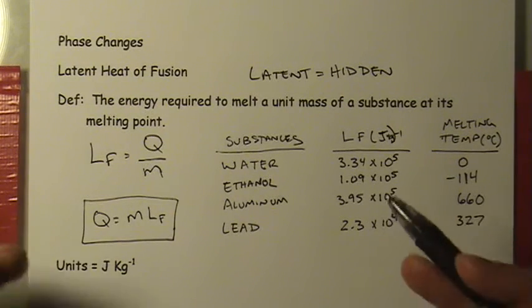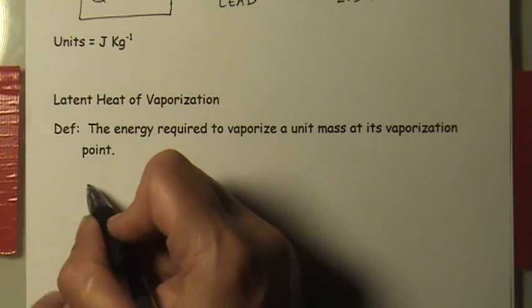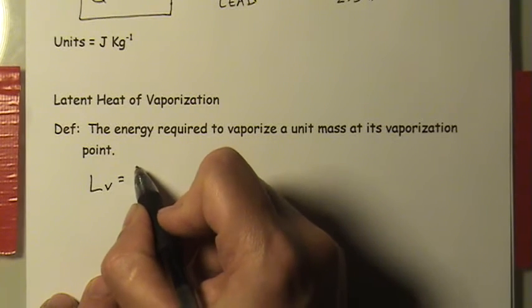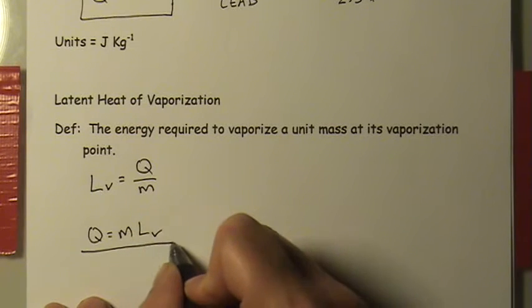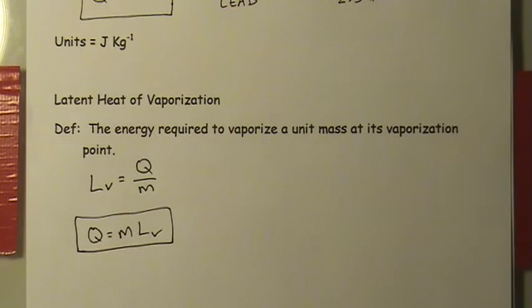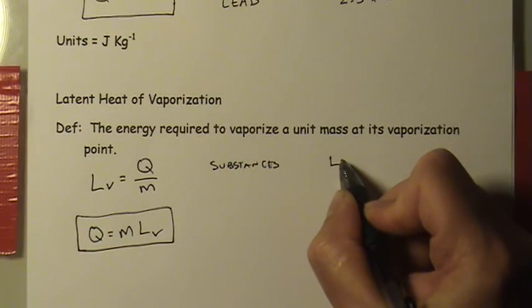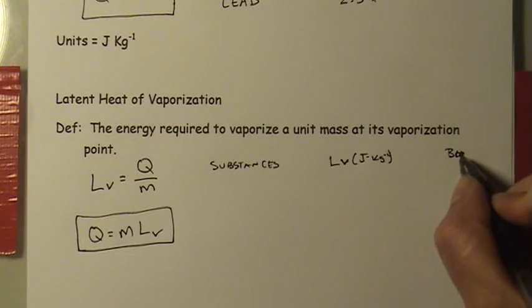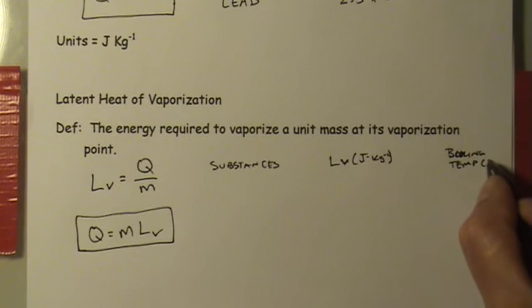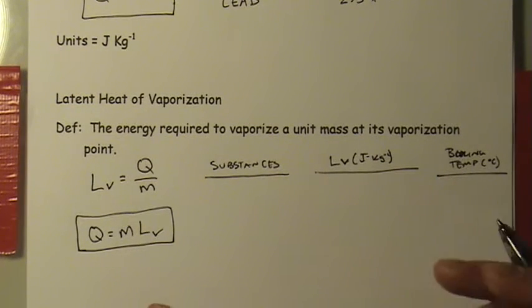Besides the latent heat of fusion, there is also the latent heat of vaporization, which refers to the energy per unit mass required to vaporize a substance. The equation is the same form: Q = mL_V. We'll build a similar table using the same substances, listing the latent heat of vaporization in joules per kilogram and the boiling temperature in degrees Celsius. You'll notice these latent heats are much larger.